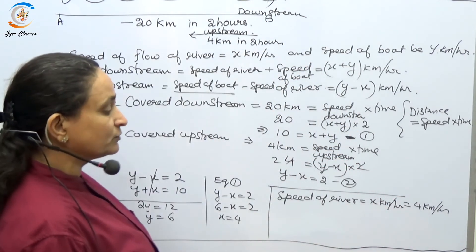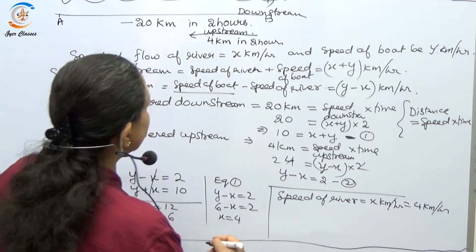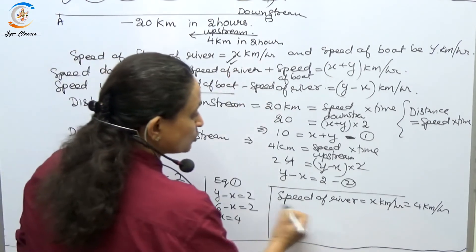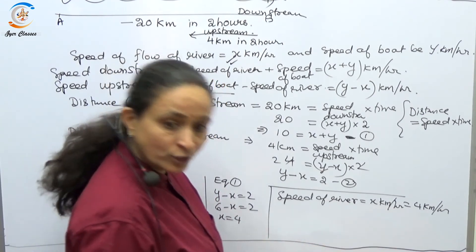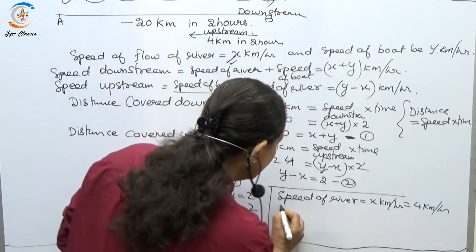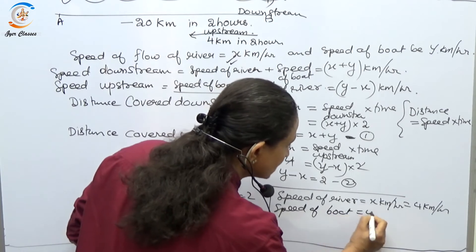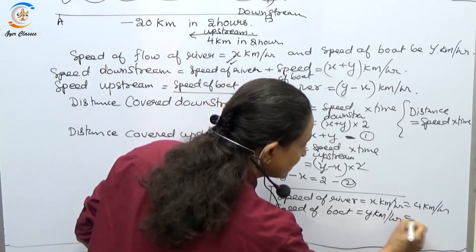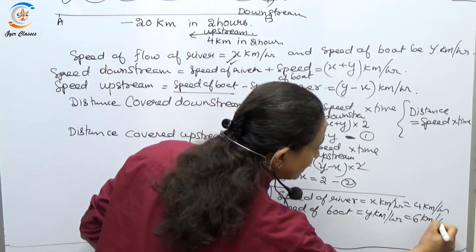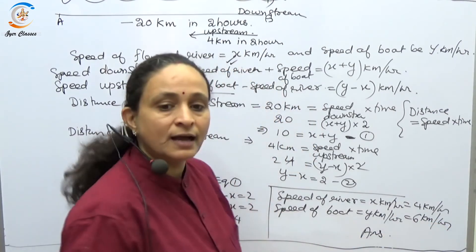The final answer: speed of the river (x) = 4 km/hr and speed of the boat (y) = 6 km/hr.